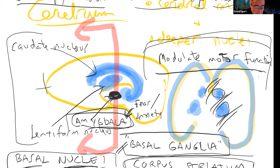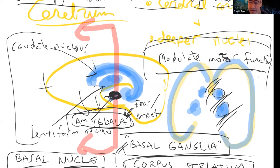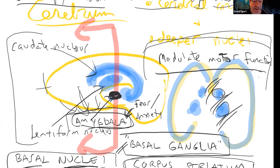There's one other pocket of gray matter that is not doing this motor modulation — it's called the amygdala. It comes from the word for almond; it's kind of the size and shape of an almond. It's gray matter, kind of at the end of the caudate nucleus. The amygdala gets a lot of attention because it is activated when people are feeling fear or anxiety.